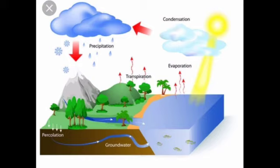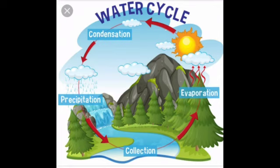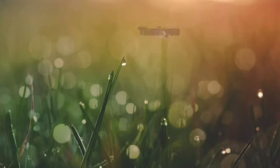These water droplets come together to form clouds. This process is called condensation. When the clouds start getting heavy and cannot hold the water droplets anymore, they fall back to the earth in the form of rain. This process is called precipitation. The sun starts heating up this water once again. This circulation of water is called the water cycle. Thank you.